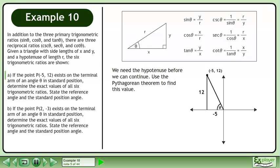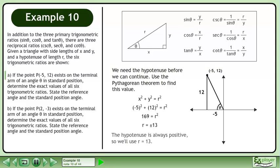We need the hypotenuse before we can continue. Use the Pythagorean theorem to find this value. The Pythagorean theorem is x² + y² = r². Replace x with the adjacent side, negative 5, and replace y with the opposite side, 12. This gives us 169 = r². Square root both sides to get r = ±13. The hypotenuse is always positive, so we'll use r = 13.